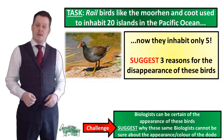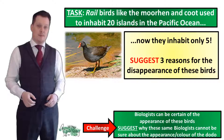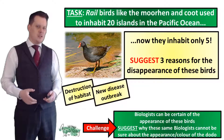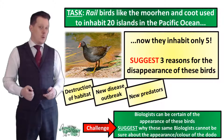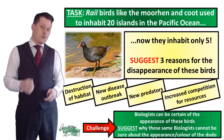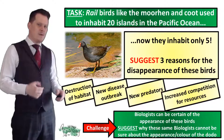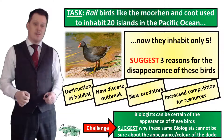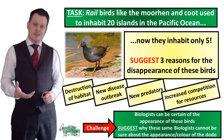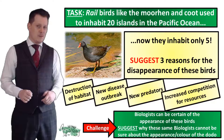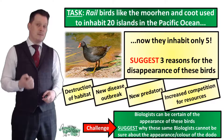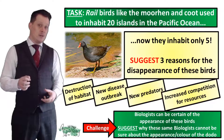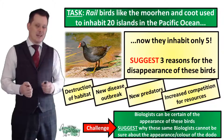These birds may have not survived on those islands because of the destruction of a habitat, a new disease outbreak, new predators being introduced, or increased competition for resources. As for the challenge: biologists can be certain of the appearance of the rail bird because there is photographic evidence and this bird still exists today. The dodo doesn't exist, no one ever took a picture of it, and the only thing we have to base its appearance on are recollections in travellers' journals. So although we have a general idea, we can't know for certain exactly what the dodo looked like.